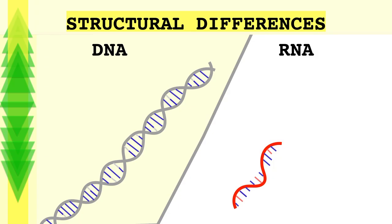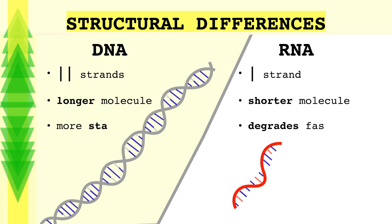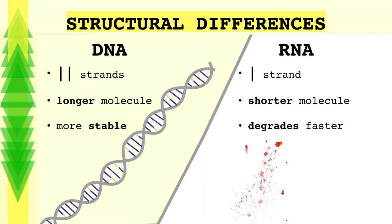Let's start with the structural differences. First, the obvious: DNA has two strands connected with hydrogen bonds between the complementary bases and it's longer, whereas RNA has a single strand and it's shorter. This makes the DNA molecule more stable, and RNA has its functional groups more exposed, making it more reactive and able to degrade much faster.